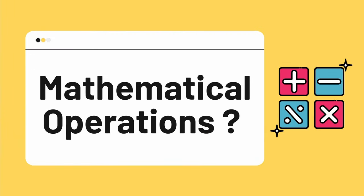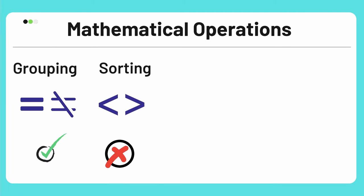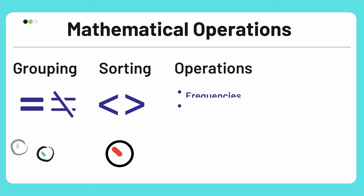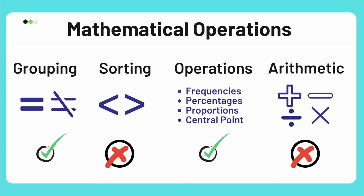In terms of mathematical operations on nominal data — this type of data can only be grouped into categories. It does not have any rank, so it cannot be sorted; even if you change the order of the data, the meaning remains the same. You can only calculate frequencies, percentages, proportions, and the central point. No other mathematical operations like addition or multiplication are possible.